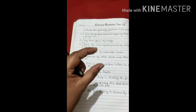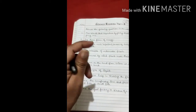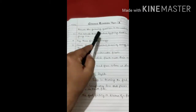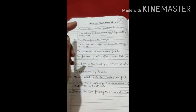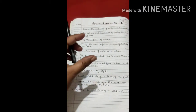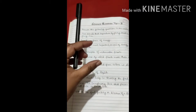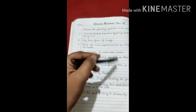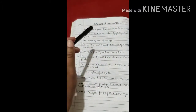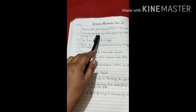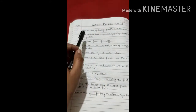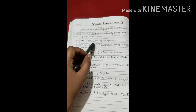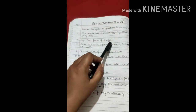Name two animals that reproduce by giving birth to young ones — give two names. Any three forms of energy — you have to write the names of three forms of energy.